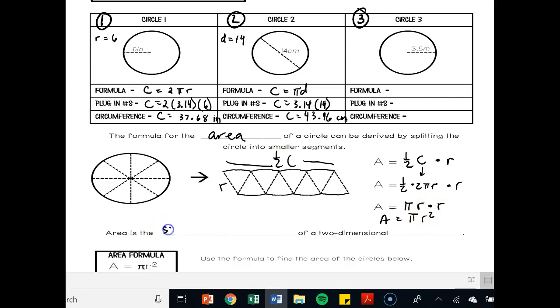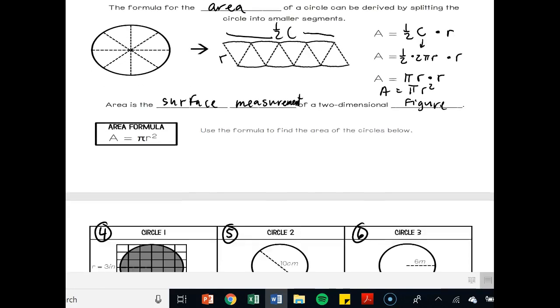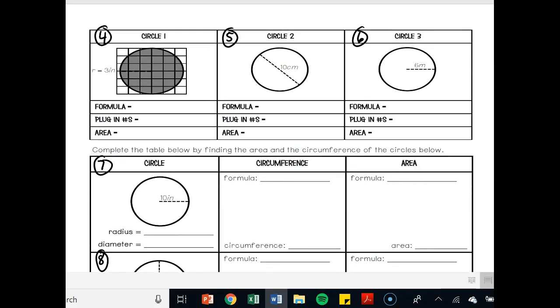Area is the surface measurement of a two-dimensional figure. So it's all the space inside. Where circumference was all the space on the outside, area is all the space on the inside. It's like how many one by one squares can I make? Take a look at circle number four. Here are all these one by one squares. Now the problem with circles is notice how some of these squares don't get filled in all the way. So hence why we have our area formula.